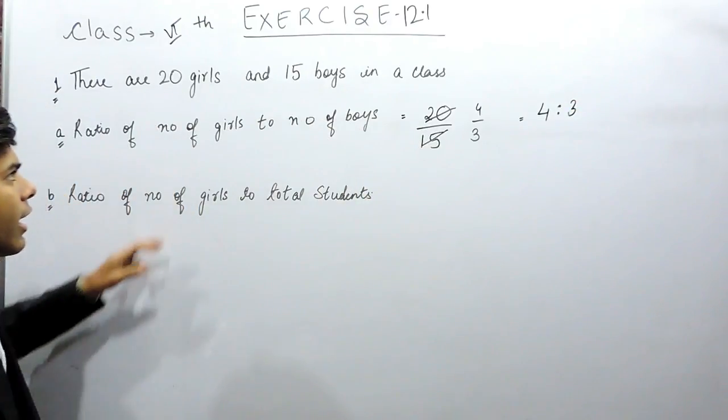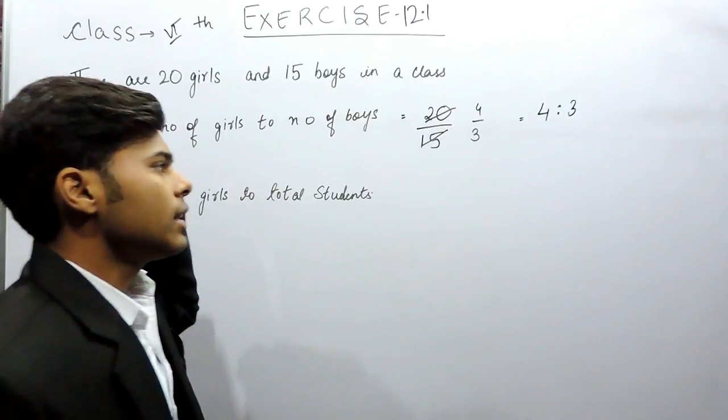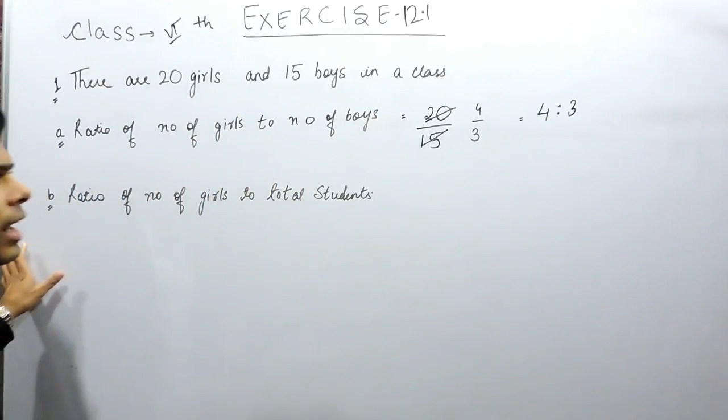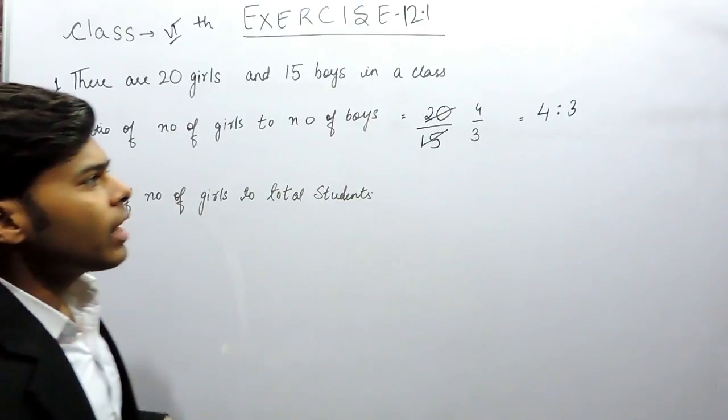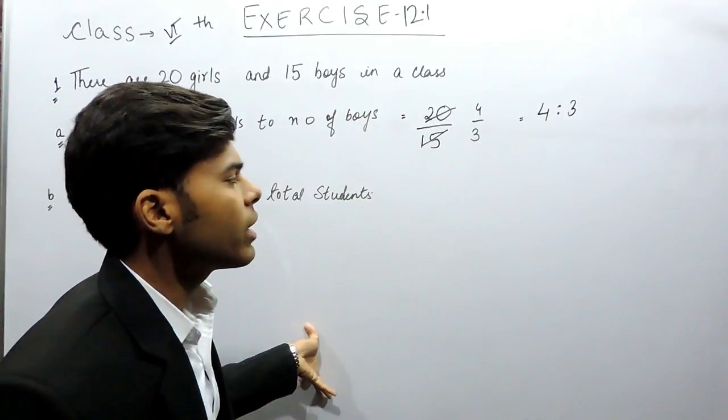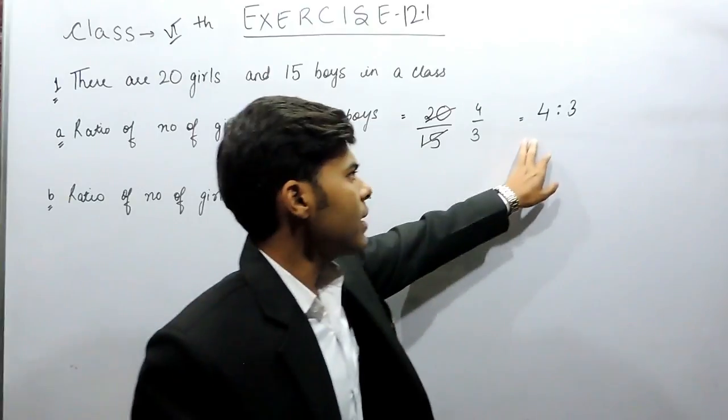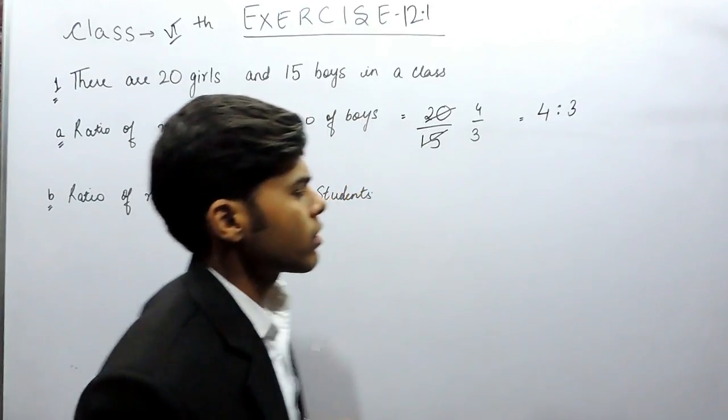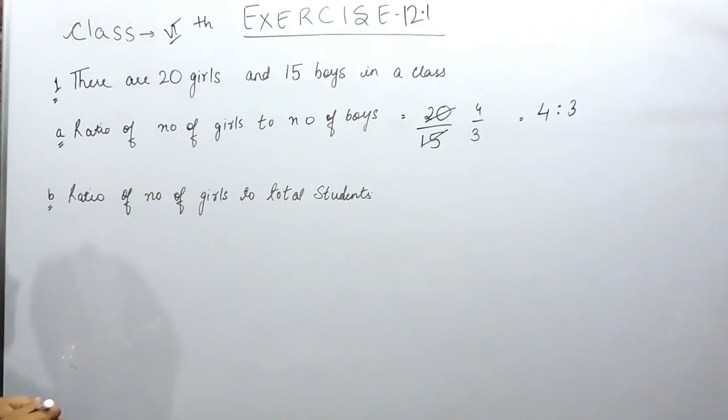That means that if we say that the total has to be 70, that means the total strength of the class is 70 and we have to tell how many of them are girls and how many of them are boys. So that means that 40 are girls and 30 are boys. So basically ratio is used for these things.